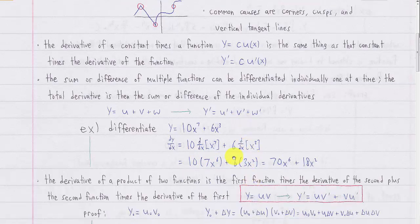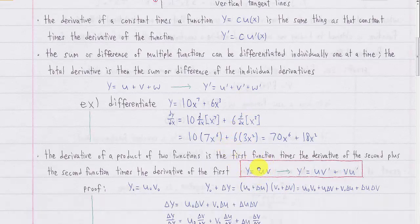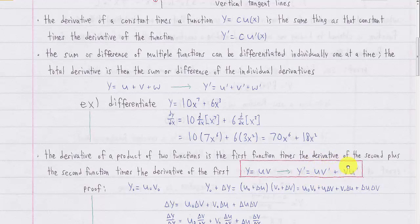What if we have the product of two functions? If we have two functions u and v, the derivative is going to be u times v prime plus v times u prime. You take the derivative of the second term and leave the first, then plus, leave the second term and take the derivative of the first. Or you can do it the other way — take the derivative of the first term and leave the second, plus leave the first and take the derivative of the second.